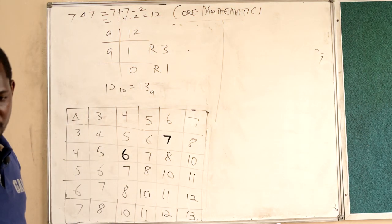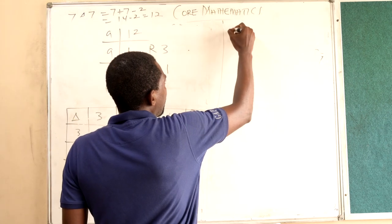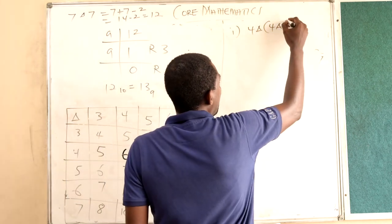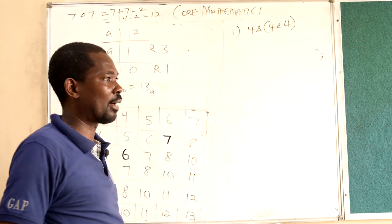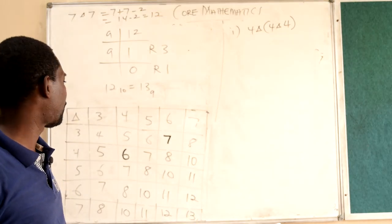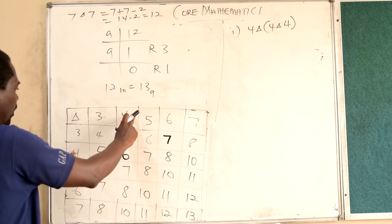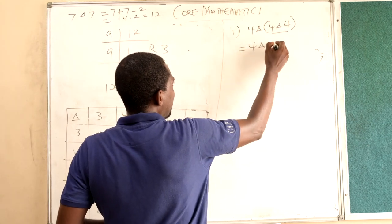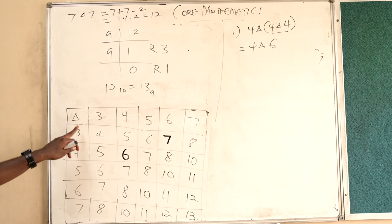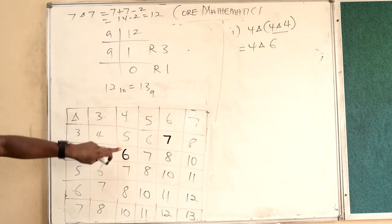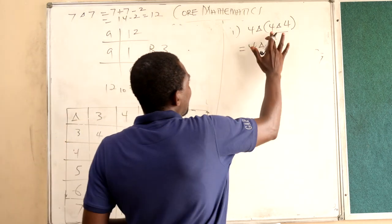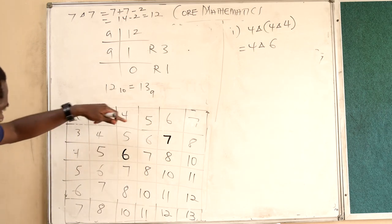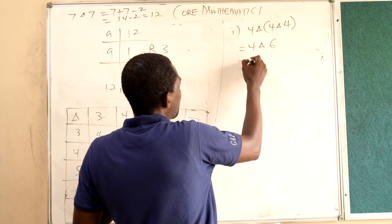From the table we are supposed to evaluate 4 triangle (4 triangle 4). BODMAS is applied here. 4 triangle 4 from the table is 6. So this becomes 4 triangle 6. Now 4 triangle 6 gives us 8. So that was the final answer.